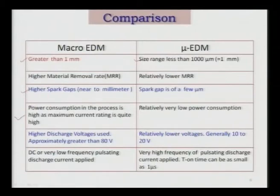This means much better accuracy can be achieved in micro EDM compared to macro EDM. DC or very low frequency pulsating discharge current is applied in macro EDM, while very high frequency pulsating discharge current is applied in micro EDM, and T-on time can be as small as 1 microsecond. There is essentially a scaling difference between macro EDM and micro EDM.